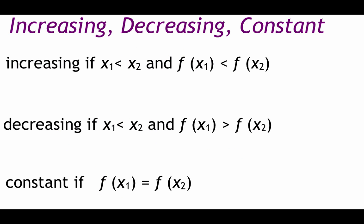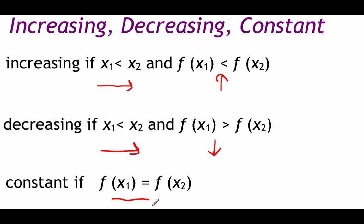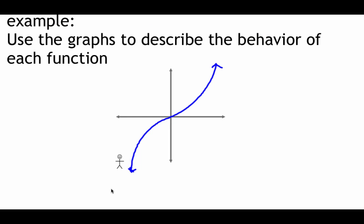Last topic for this video: we're talking about pieces of graphs and whether they are increasing, decreasing, or constant. A graph is increasing if, as we move from left to right along x values, the y values are going up. A graph is decreasing if, moving left to right, the y values are going down. A graph is constant if the y values are exactly the same — like a flat portion of the graph. We'll write these intervals using x values, similar to interval notation.